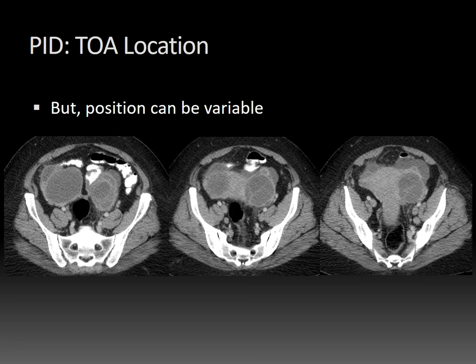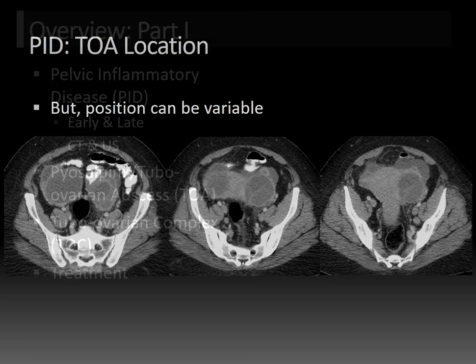However, the tubovarian abscess location can be variable. In this patient, there are bilateral anterior complex fluid collections or masses in the adnexa. One might originally consider that these could represent cystic ovarian neoplasms given their location, but these did turn out to be bilateral tubovarian abscesses. You can also see some mild fat stranding in the pelvis, which is a clue.